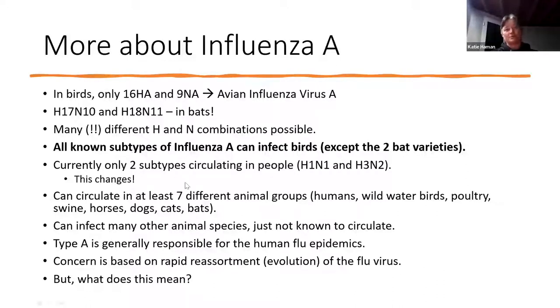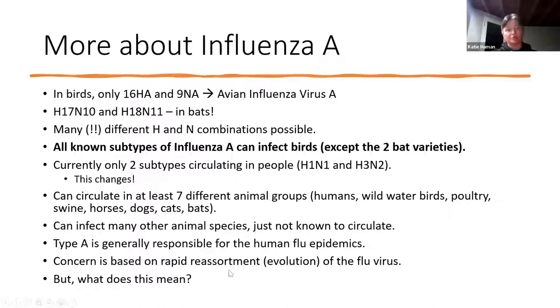Influenza A does circulate in a lot of different animal groups and it can cause epidemics, which is one of the reasons why we can be really concerned about it from a human health perspective.